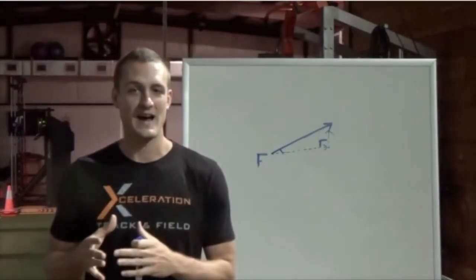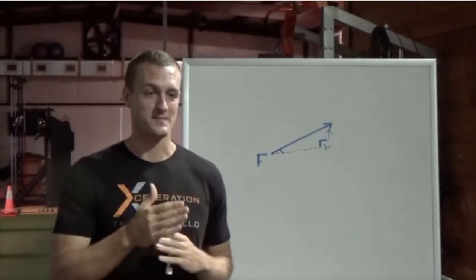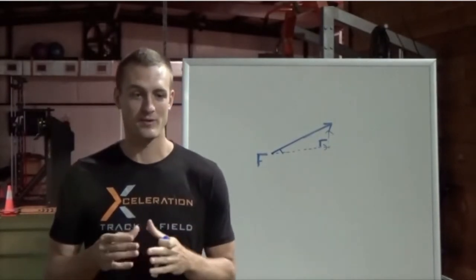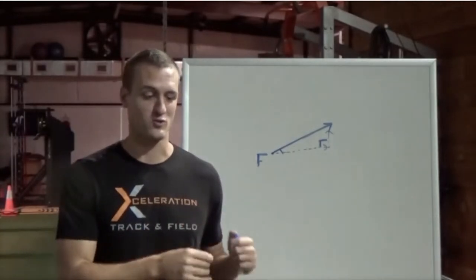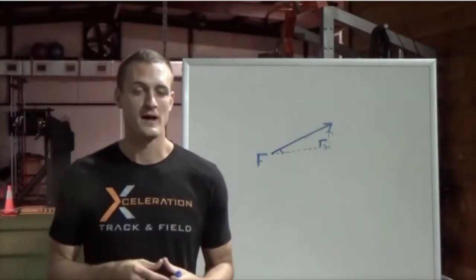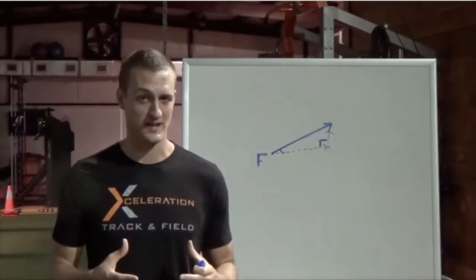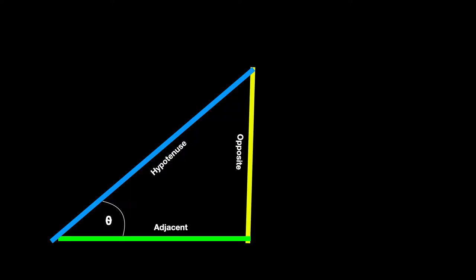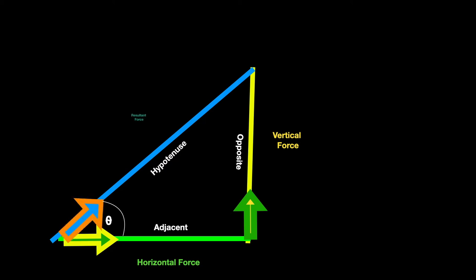A force cannot produce acceleration that is perpendicular to that force. Therefore, a vertical force can't produce horizontal acceleration, and a horizontal force cannot produce vertical acceleration. Vertical and horizontal forces are separate and do not affect each other. Any vectored force that is not horizontal or vertical is always the hypotenuse of those two forces.